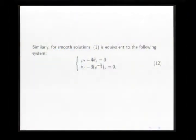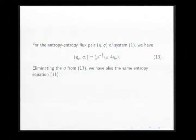Similar for smooth solutions. System one is equivalent to the following system. Made the same change of variable. From the entropy-entropy flux eta-q for system one, we have this expression. And eliminating the q from equation 13, we have also the same entropy equation. In this case, we prove the two systems have the same entropy.